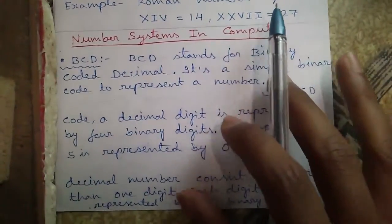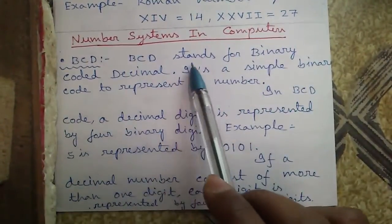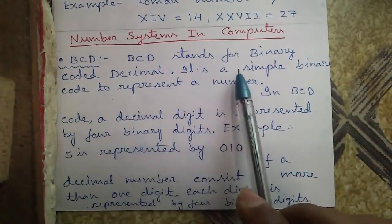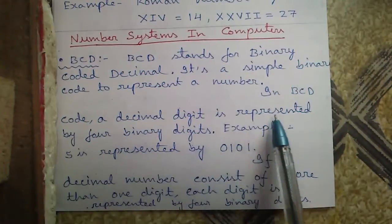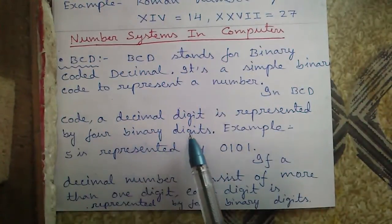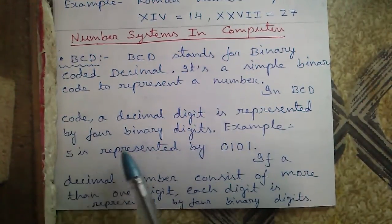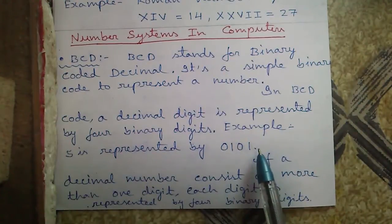Now some number system used in computers. BCD. BCD stands for binary coded decimal. It's a simple binary code to represent a number. In BCD code, a decimal digit is represented by 4 binary digits. For example, 5 is represented by 0101.